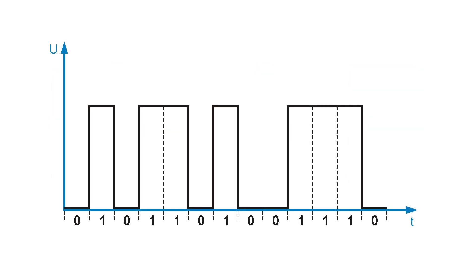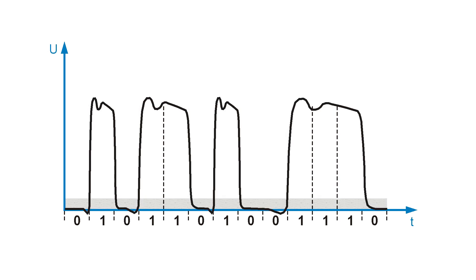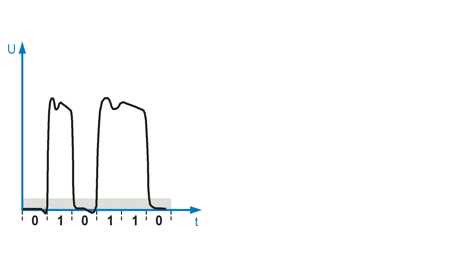Can digital signals be transferred without such problems? Of course not — it is actually even more difficult to transmit clean rectangular impulses than a sinusoidal signal. Digital signals also become distorted under certain circumstances when received. But let us remember: we don't directly transmit our output signal, but only a sequence of binary numbers. So it only comes down to distinguishing between the values 0 and 1 at the receiver.